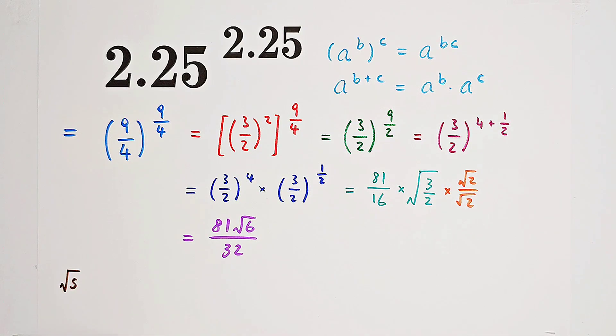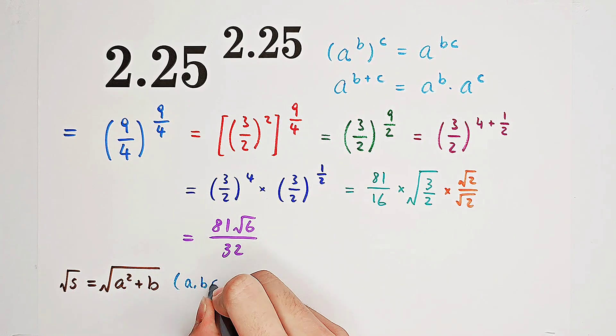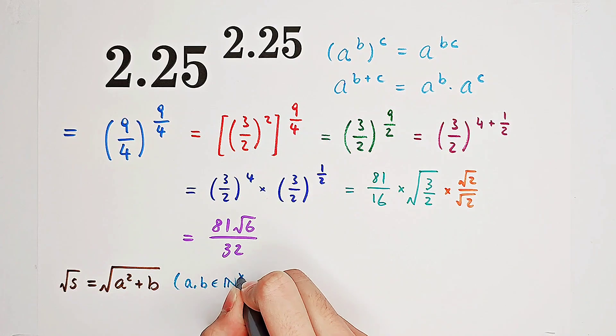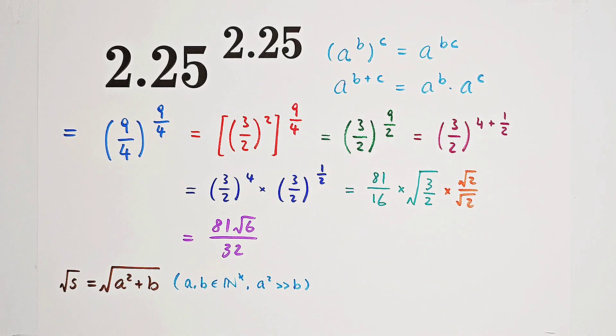Now, for any positive integer s, we write s as a squared plus b, where a squared is much greater than b, and they are both positive integers. So a squared should be the closest perfect square to s, which is smaller than s.